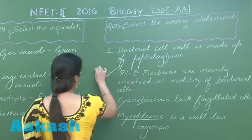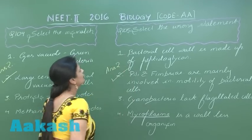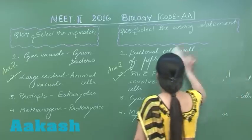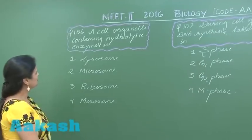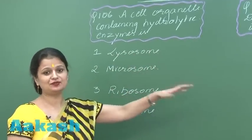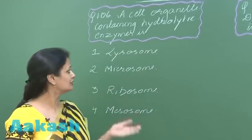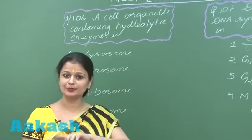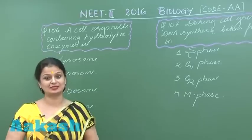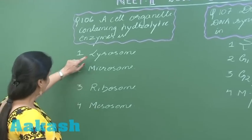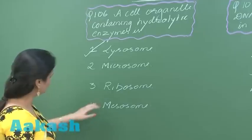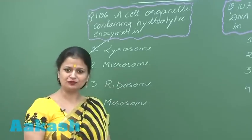Question 106: a cell organelle containing hydrolytic enzymes. The organelle which contains hydrolases is the lysosome, and these hydrolases work at acidic pH — that is why they are called acid hydrolases. So the right option is option number one. Microsomes: when centrifugation of a cell is done, the endoplasmic reticulum breaks and forms vesicles, and these vesicles represent microsomes.